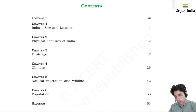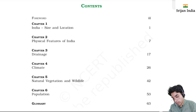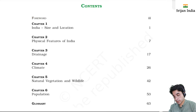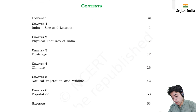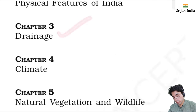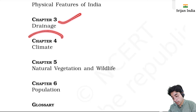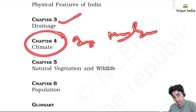Hi, so we started Class 9th geography. We studied India's size and location, geographical coordinates, number of states, and geographical boundary. Then we studied physical features of India, drainage - rivers and all, climate - India's climate, the monsoon, the seasons.